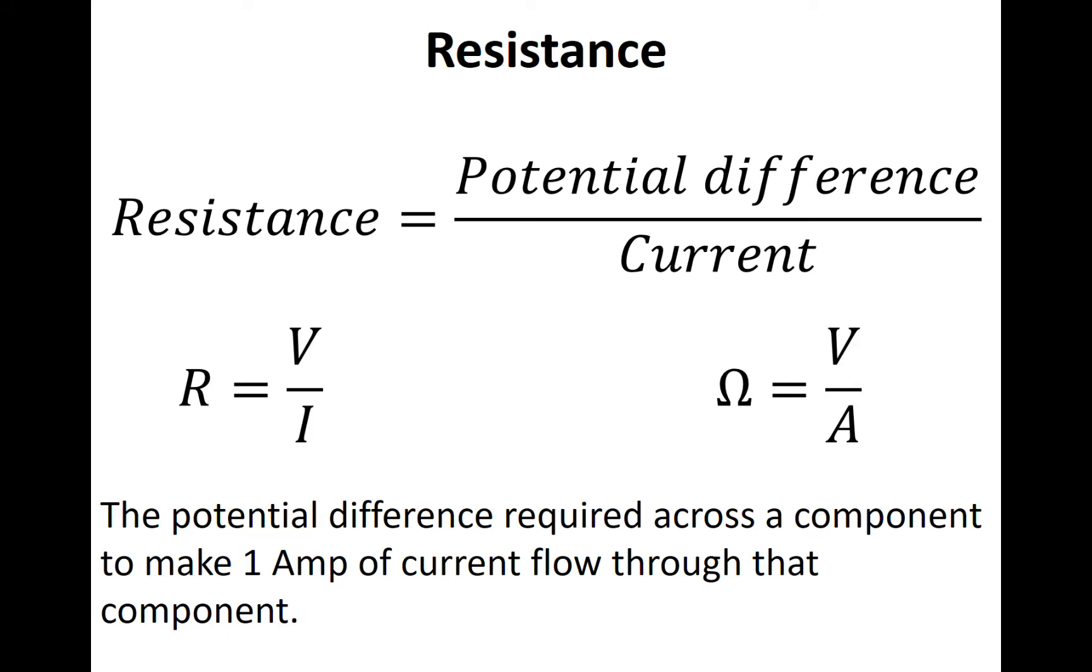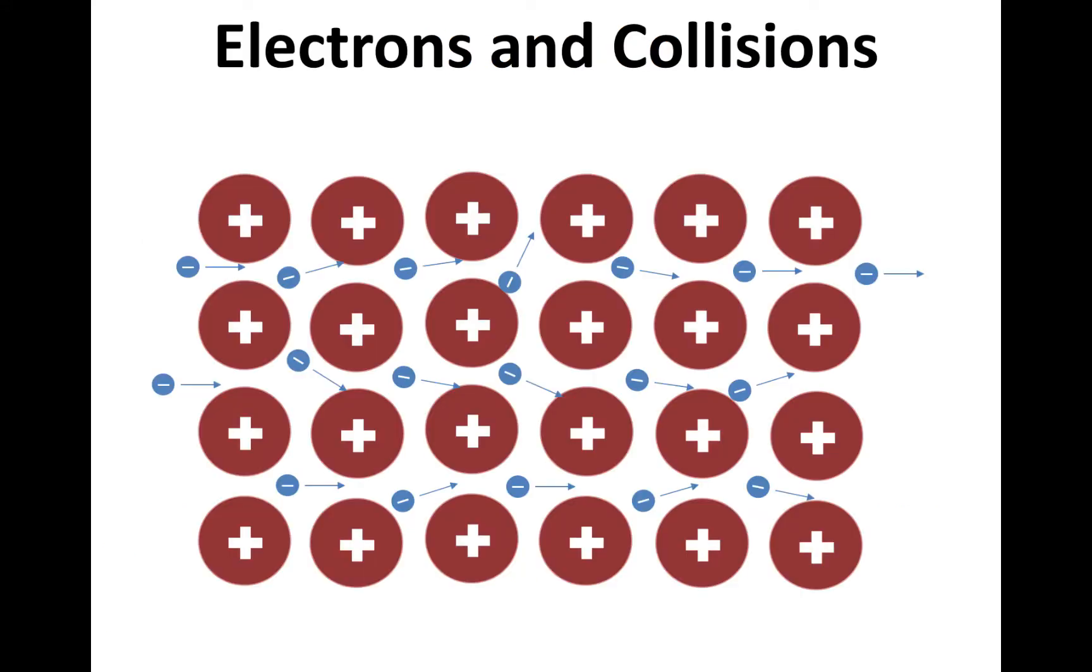The cause of resistance is electrons colliding with ions in a material. Electrons are wanting to flow in this image from left to right. A potential difference is applied which gives the electrons a push. Once they're pushed, they will begin flowing from left to right. However, on their way some will collide with ions in the metal lattice. It is these collisions which cause resistance.